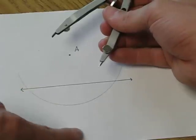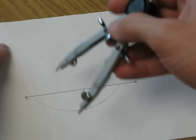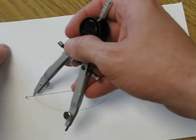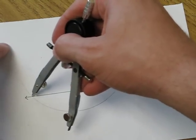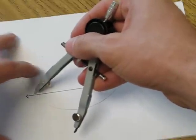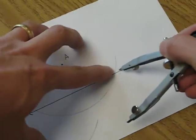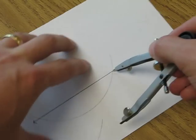The radius really doesn't matter as long as you can get them to cross each other. I'm going to open mine up just a little bit and from each side I'm going to make a mark and I'm looking for an X.